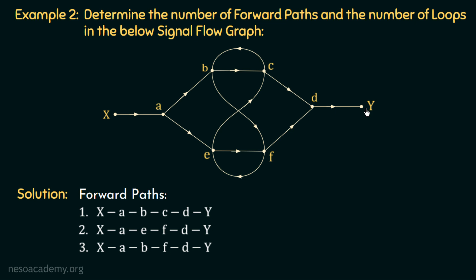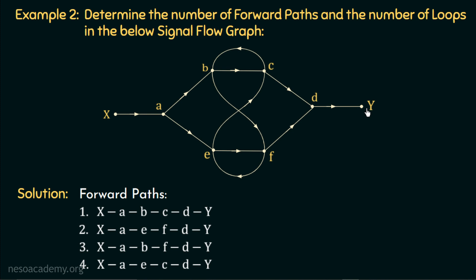Let us find one more forward path. Starting from node X, we move to node A, then to node E, then take the branch to node C, then to node D, and finally to node Y. This is the fourth forward path: X, A, E, C, D, Y. We have counted four forward paths so far — pause the video and try to find more on your own.